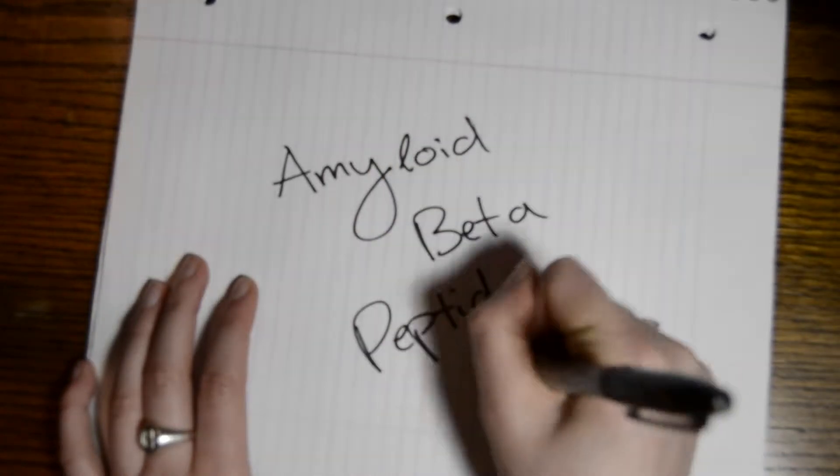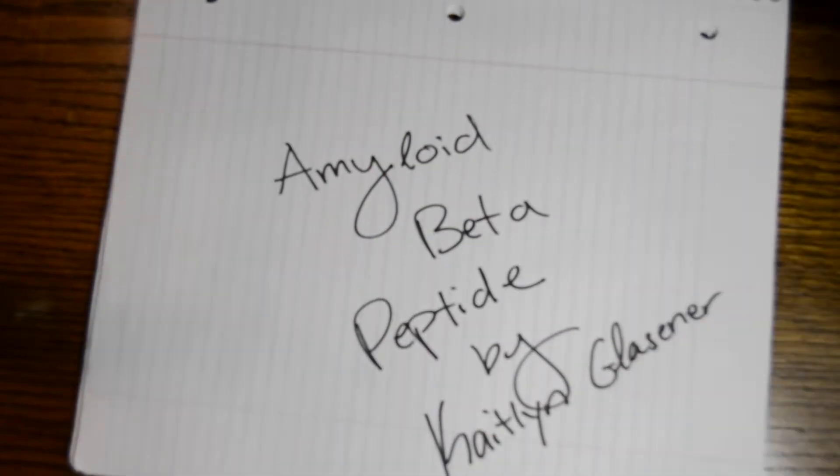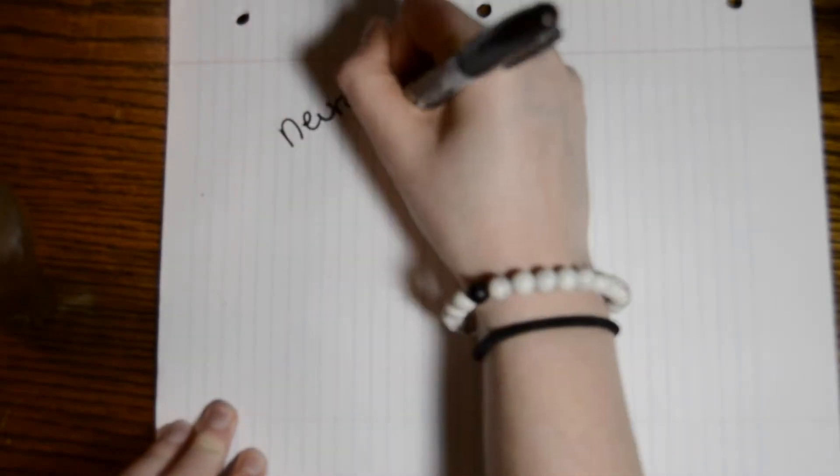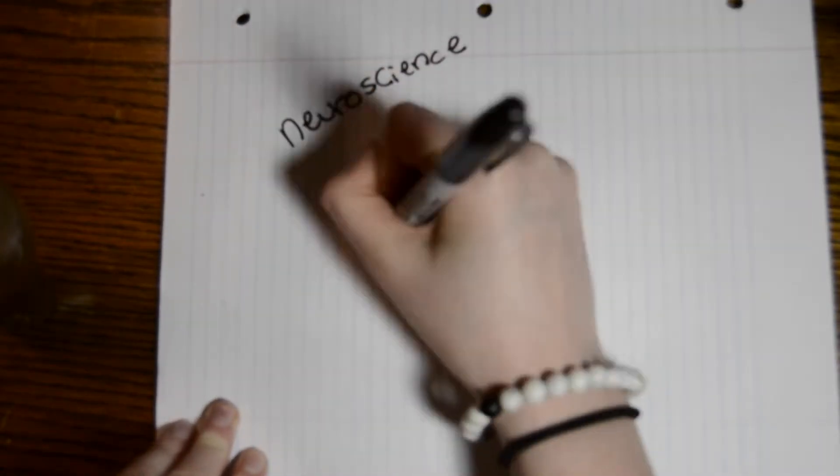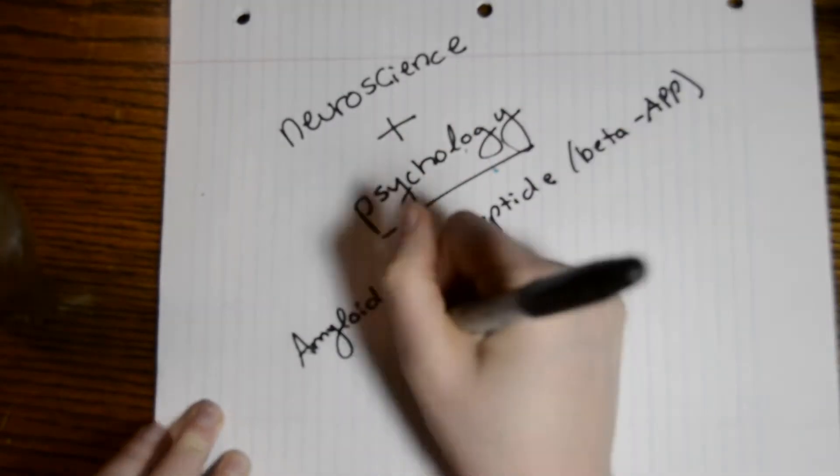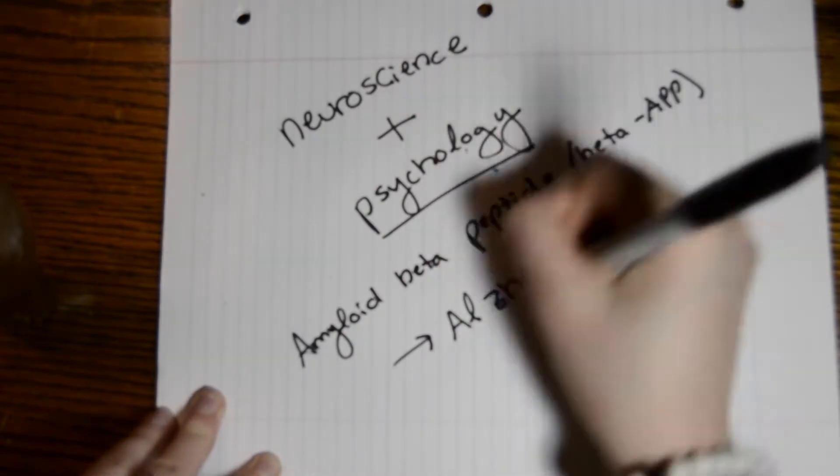This is amyloid beta peptide by me, Caitlin Glaesner. Throughout college, I was very interested in studying neuroscience and psychology, which applied directly to the amyloid beta peptide as it has many implications in neuronal death in Alzheimer's.